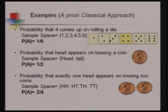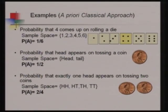Let us see examples of the classical approach. First example: what is the probability that four comes up when rolling a die? Rolling a die can produce 1, 2, 3, 4, 5, or 6 — I collect all possible outcomes as the sample space. My favorite outcome, four, appears one time, and six is the total number of possible outcomes. So the probability of four appearing when rolling a die is 1/6.